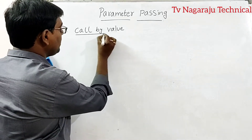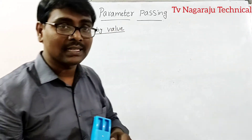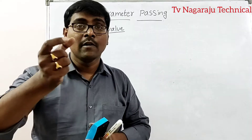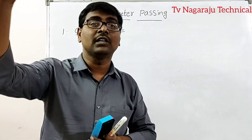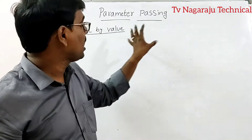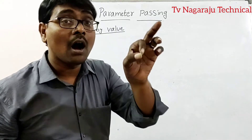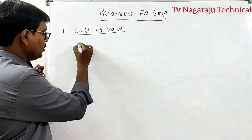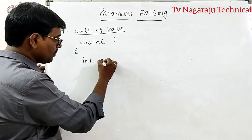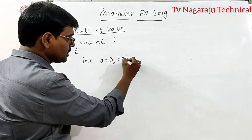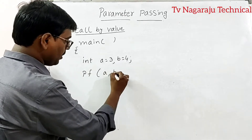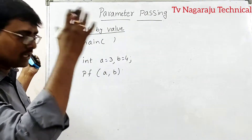The first one is call by value. In call by value, we are passing the values from the function call to the function definition — we are passing just the R-values. Consider one example: in main(), a = 3, b = 4. We print a and b, then call swap(a, b), and then print a and b again.